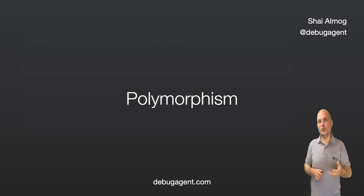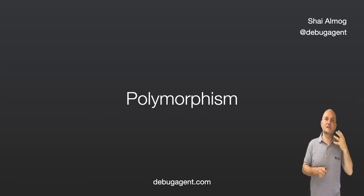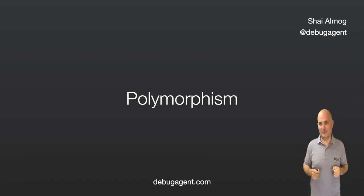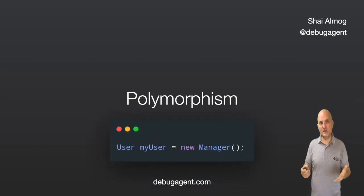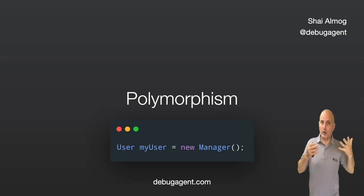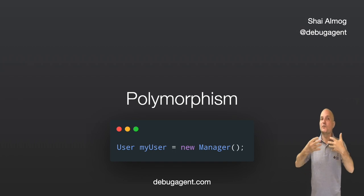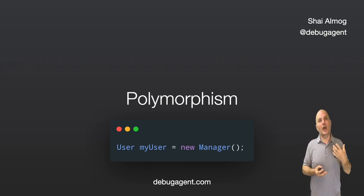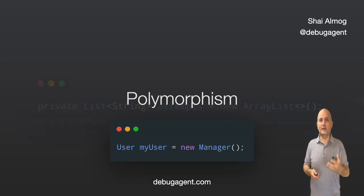Which brings us to the third and final principle of OOP: polymorphism. That's a scary word for a not-so-scary concept. In fact, we just saw it a moment ago. In this code, the manager class is assigned to a user object — that means we use it as a user. The object appears as if it's a different object in the hierarchy, and we can treat it as such. In fact, we've done it for quite a while in the code.